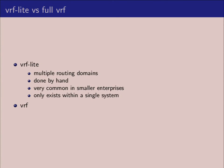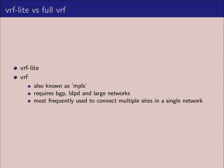VRF Lite and VRF are what's commonly known in the networking world — originally Cisco definitions that Juniper and other larger network vendors started using. VRF Lite is simply multiple routing domains, generally done by hand on a single system, designed for a smaller entity with one or two routers that need to do a lot of different customer interconnects. VRF is also known as MPLS, which involves interaction between BGP, LDP, and usually requires larger networks.